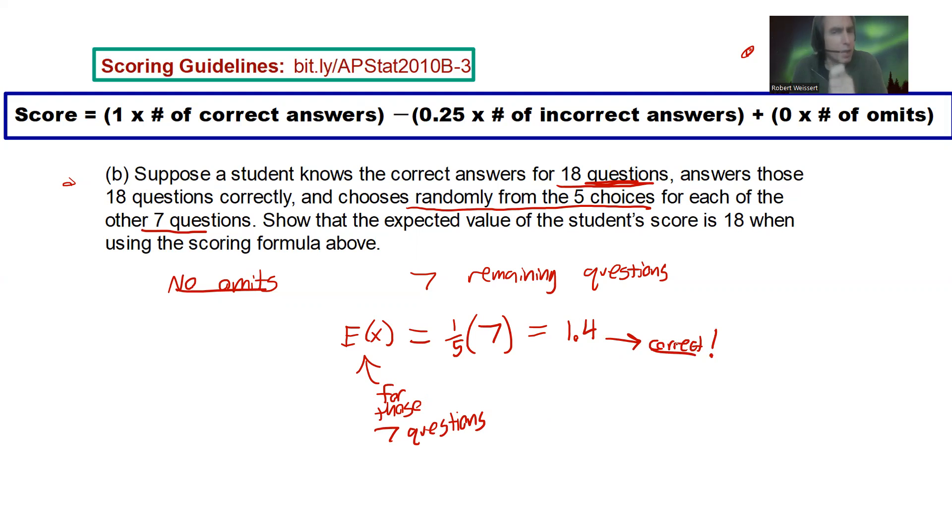If I'm going to get, if I'm expected to get 1.4 correct, how many am I going to get incorrect? Well, there's seven questions. So, seven minus 1.4. That's 5.6. That's going to be how many I get incorrect. And again, no omits, right? Students just picking each answer out of those. So, let's go back to this formula.